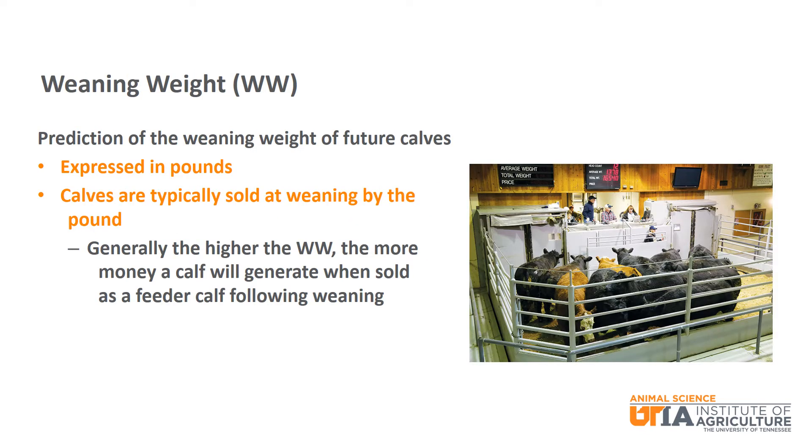Next is weaning weight. The weaning weight EPD is a prediction of the weaning weight of future calves and is expressed in pounds. Since calves are typically sold at weaning and by the pound, generally the higher the weaning weight, the more money a calf will generate when sold at weaning.